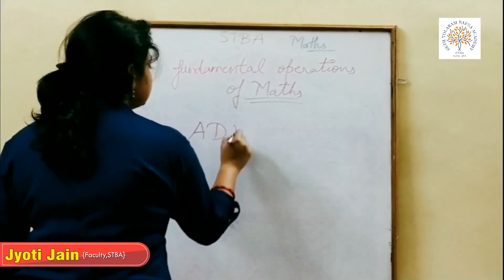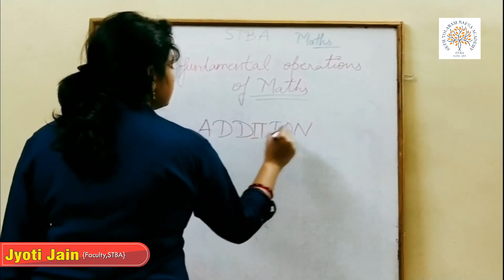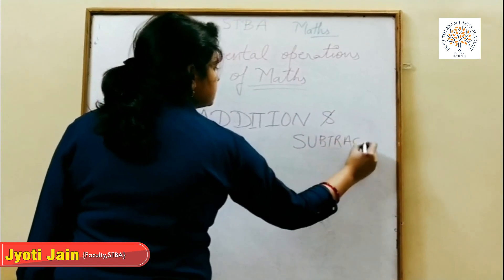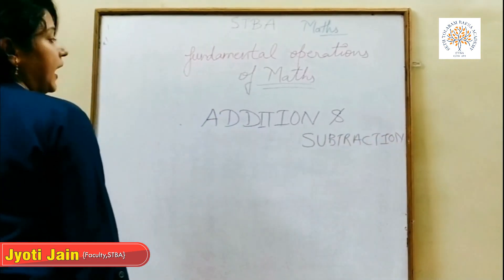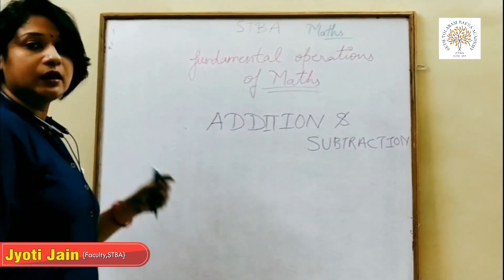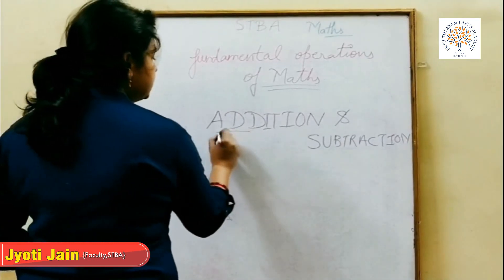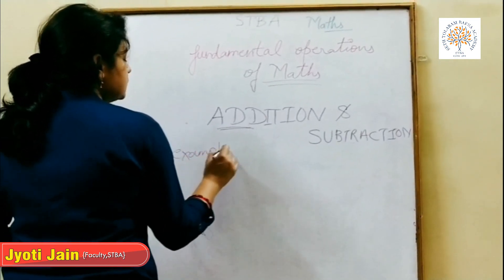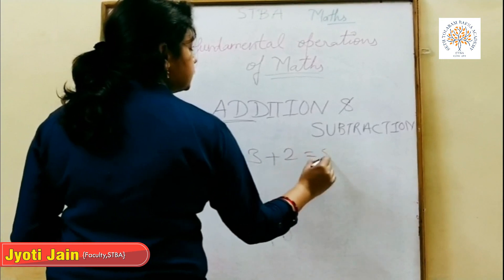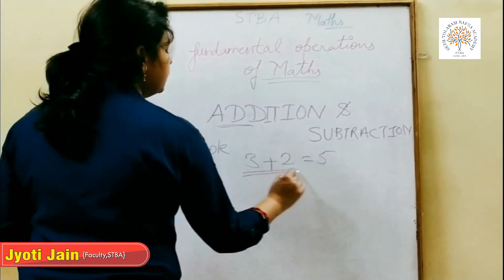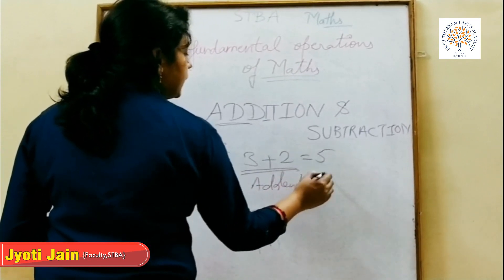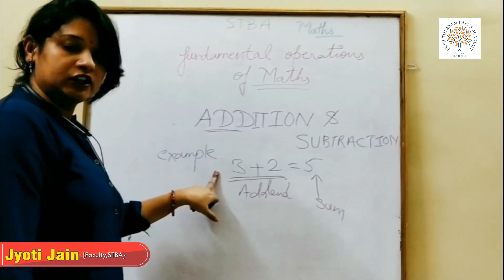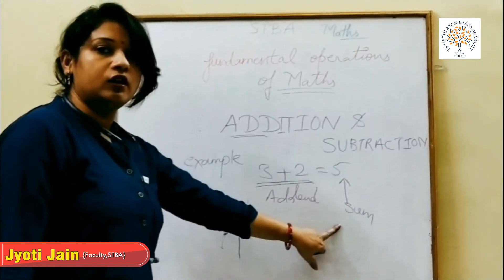Addition means when we add 2 or more numbers, the sum of 2 or more numbers is called addition. The numbers used for addition are called addends, and the result is called the sum. For example, 3 plus 2 equals 5.